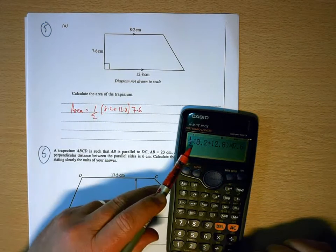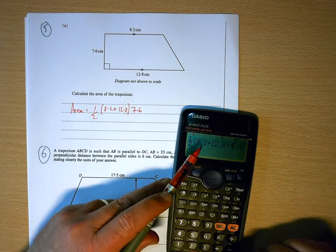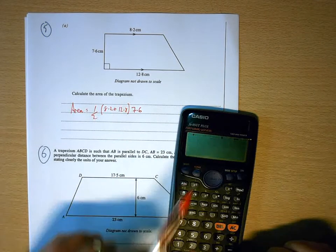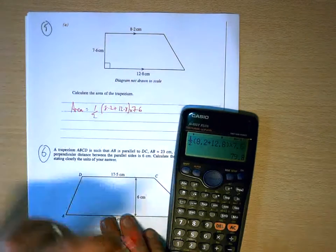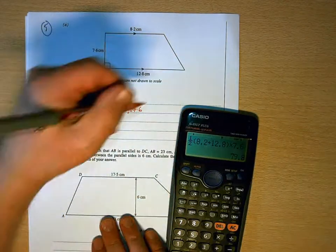So what we need to do is put a times in there. So if we've got half, 8.2 plus 12.8, times 7.6, and press equals, there's our answer. So we need, on the calculators that we use, to put a times there.